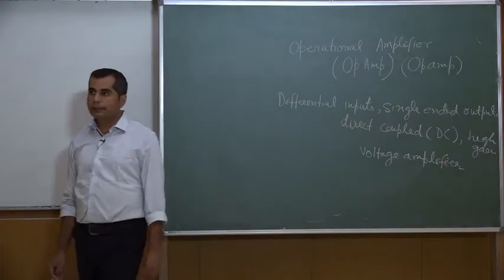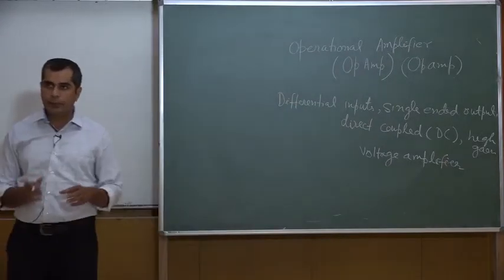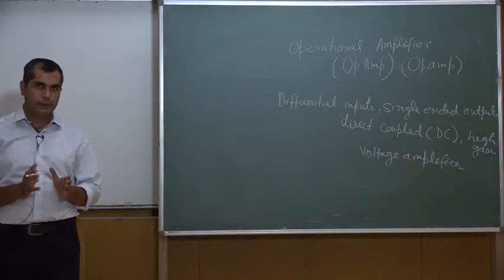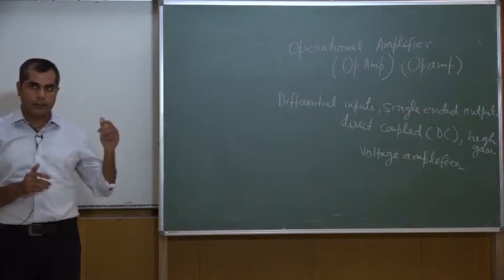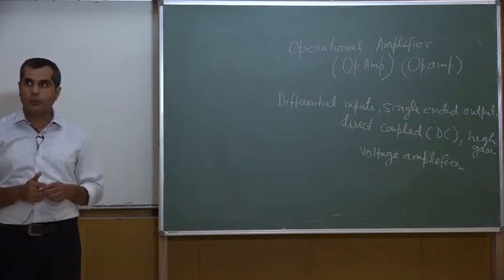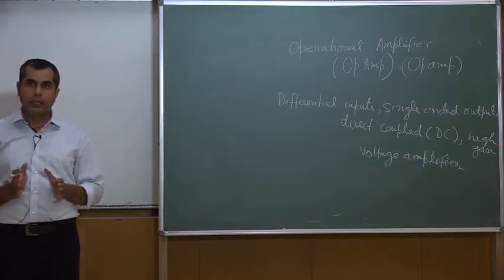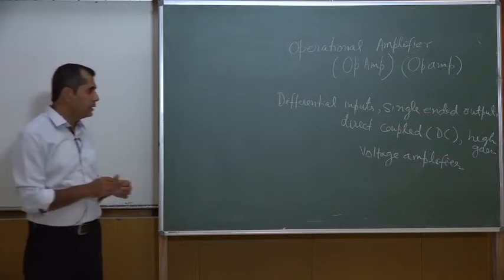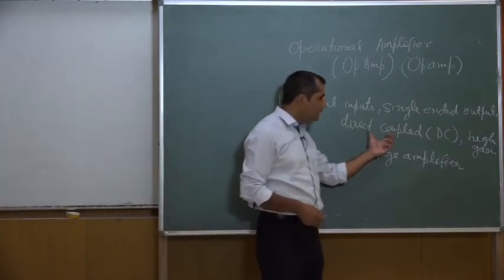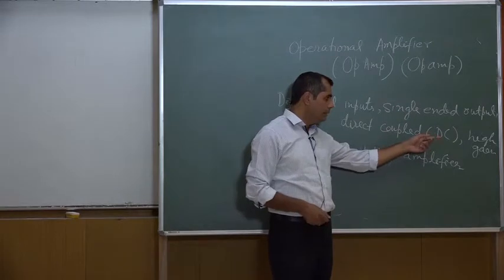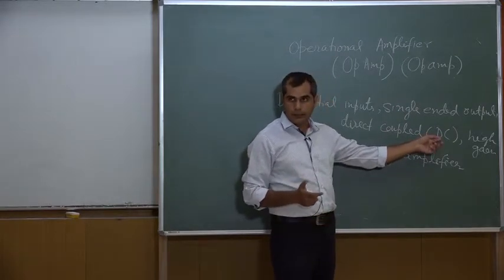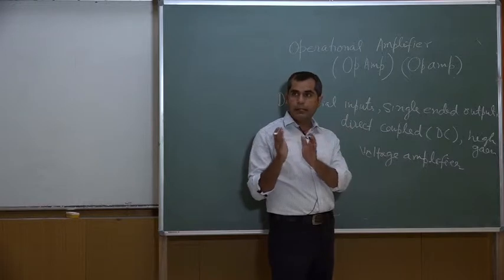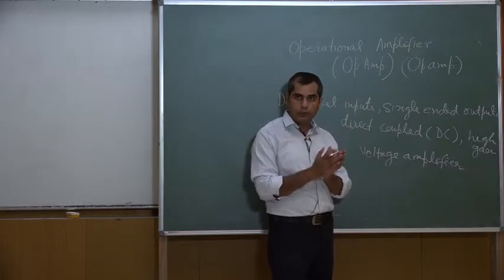Basically, it is a multistage amplifier — there are a number of stages in the amplifier. This operational amplifier's stages are directly coupled to each other. That is why this term 'direct coupled' originates here. DC means direct coupled, not direct current — the stages are directly connected to each other.